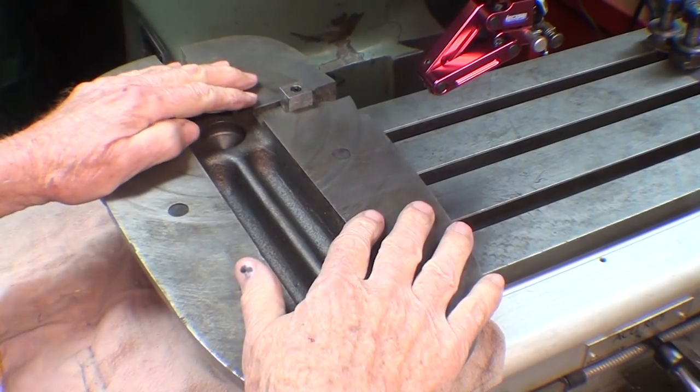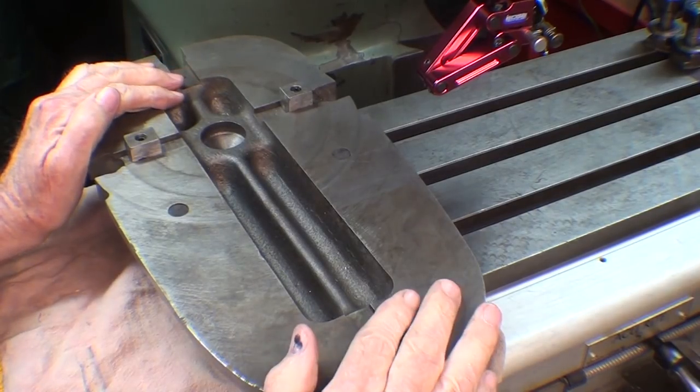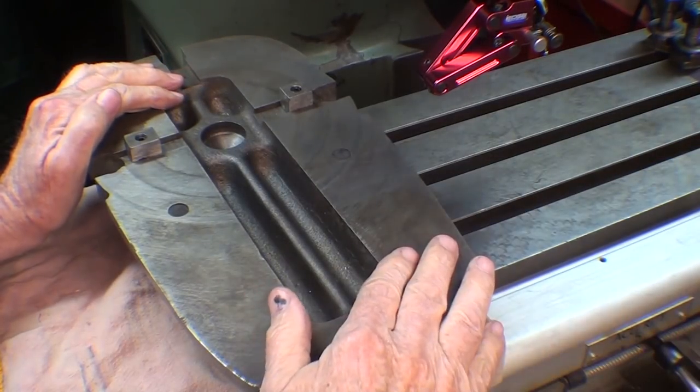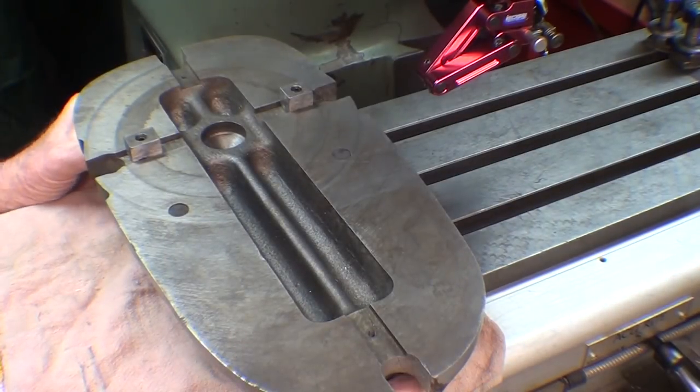My Bridgeport 5-inch vise has keys on the bottom so I'll flip it over, mount it and see how accurate that it truly is. Make sure your vise is clean and your table is clean when you mount your vises.